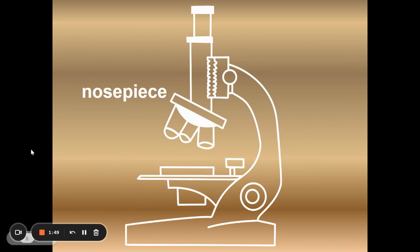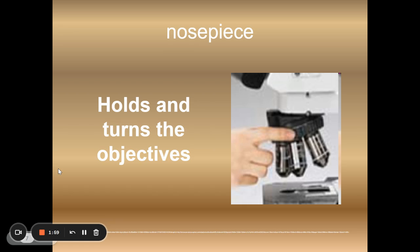Moving down we have the nose piece. The nose piece may be referred to as the revolving nose piece or the rotating nose piece because it does move. The nose piece contains the objectives and turns the objectives which allows you to change magnification. So most of our microscopes have three objective lenses and you can see them off of this nose piece.